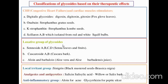Laxative group of glycosides: cascarosides A, B, C, and D obtained from senna leaves and fruits. Cascarosides A and B also obtained from cascara bark. Barbaloin and aloin from aloe vera and Aloe barbadensis juice. Local irritant group: sinigrin from black mustard seeds, Brassica nigra. Analgesic and antipyretics: salicin and salicylic acid from willow bark, Salix bark. Anti-inflammatory group: aloin for acne, glycyrrhizin for peptic ulcer.